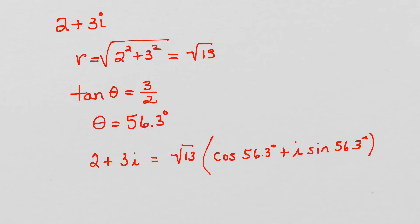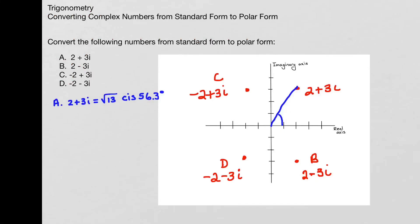And now I can use this information to find the other three. I just found that 2 plus 3i is equal to, roughly, because we rounded, the square root of 13 times the cosine of 56.3 degrees plus i sine 56.3 degrees. And I've got a little shorthand notation for cosine of an angle plus i sine of that same angle. We can just abbreviate to cis. And then when you write your final answer, you can expand it back out.